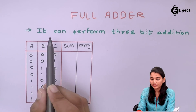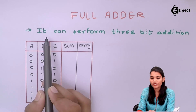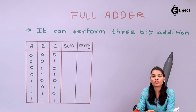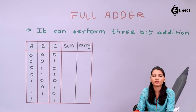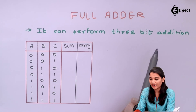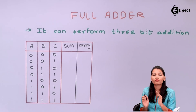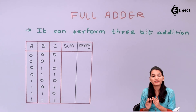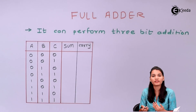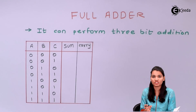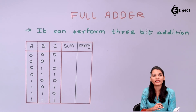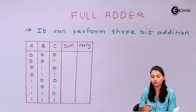The full adder circuit is basically used to perform the addition of a three-bit number — it can perform three-bit addition. Whenever we want to construct the circuit we always have to form the truth table. From the truth table we can get the equation, and from the equation we can construct the full adder circuit with the help of gates. So let's see the truth table.